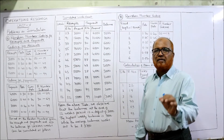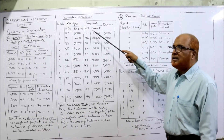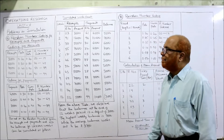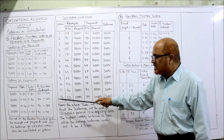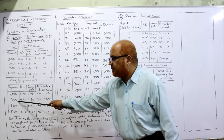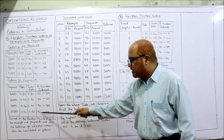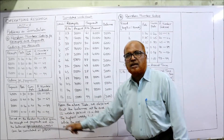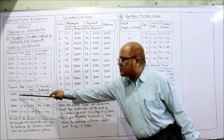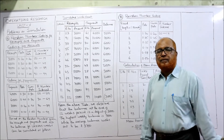Similarly, find the simulated payments using the payment random numbers. The first random number 61 falls between 30–69, so the payment is 6,000. Next, 96 falls between 90–99, so the payment is 10,000. Locate each random number in the payment coding interval and take the corresponding payment value. This gives us the simulated receipts and payments.